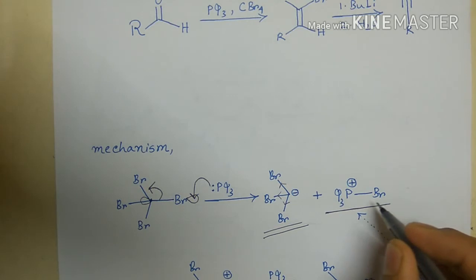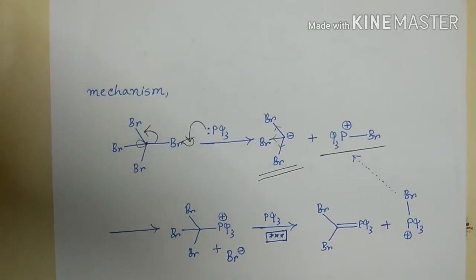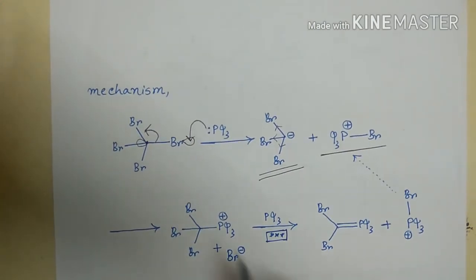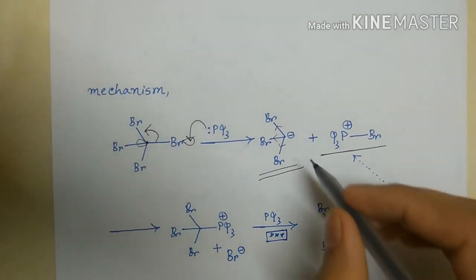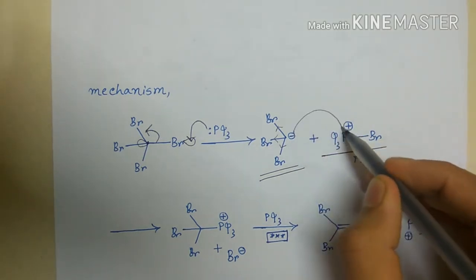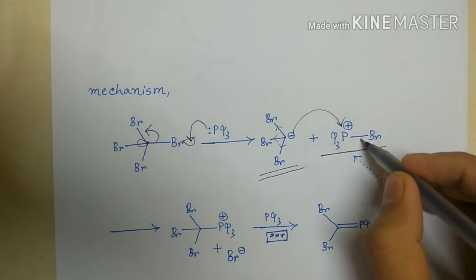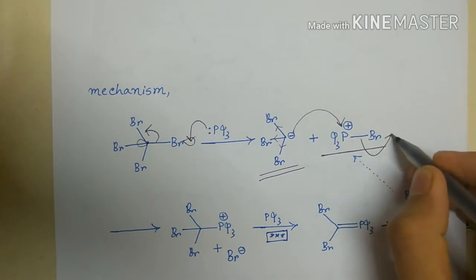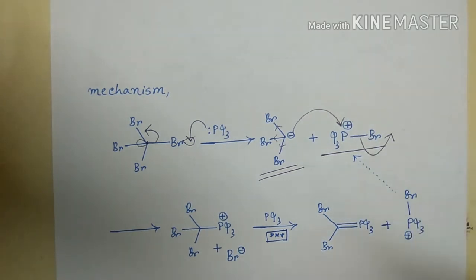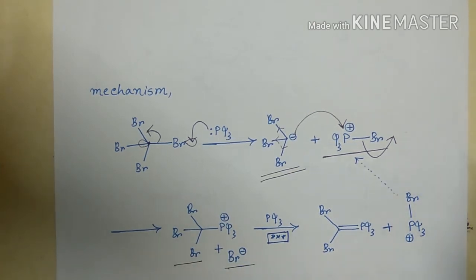A phosphorus cation is generated. In the next step, this carbanion carbon attacks the positive phosphorus center and displaces a bromide ion, giving a new phosphonium species along with the released bromide.